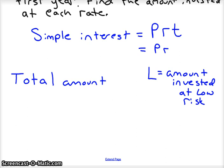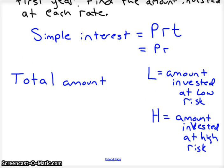And I'm going to have a capital H represent the amount invested at high risk. So we've got L and H. We would know then that our total invested would be L plus H, and we know the total amount we invested was $6,000. So that's the total amount.